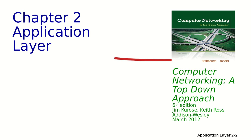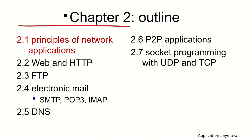The second chapter is also from the same book, 'Computer Networking: A Top-Down Approach,' sixth edition, by Kurose and Ross. Here is a brief outline of the entire chapter: section 2.1 covers principles of network applications.